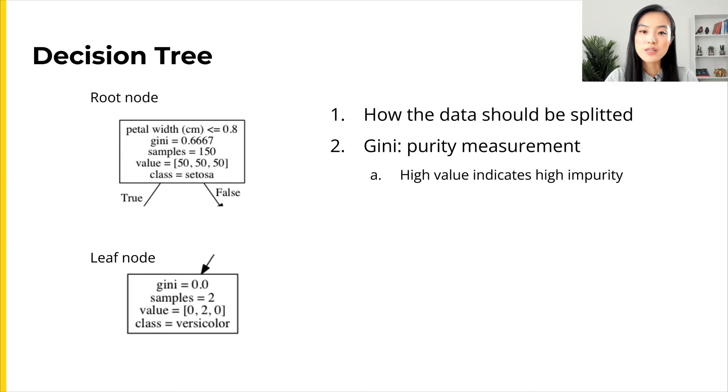The first line shows which feature is split on and what is the splitting threshold. For every data point in the data, if this is true, the data points will go to the left child node, otherwise it will go to the right child node.